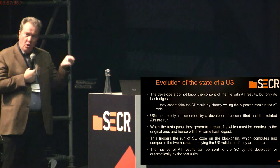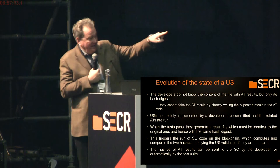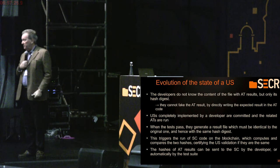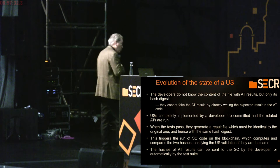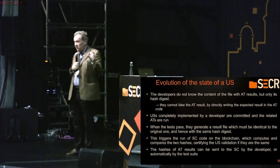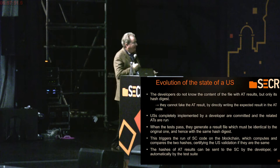Clearly, the developers don't know the content of the file with the results but only the hash digest of it, so they cannot fake the results. The stories are implemented by the developer and committed; when committed, the tests are run by the developer, and when the tests pass they generate a result string which must be identical to the original one and hence have the same digest. This triggers the smart contract to mark this test as passed, and when all are passed the story is completed.